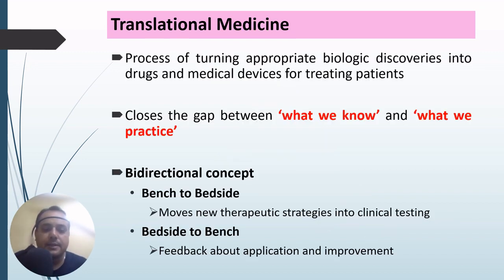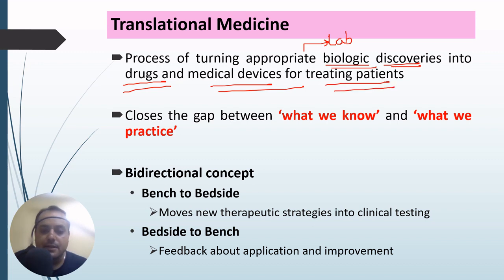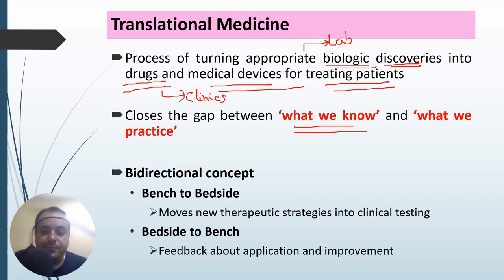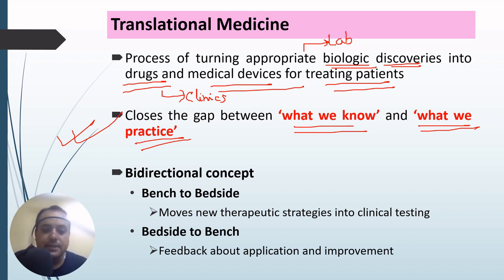Translational medicine is the process of turning appropriate biological discoveries — whatever we have discovered in the labs — into drugs or medical devices for treating the patient. This closes the gap between what we know through research in the laboratory and what we ultimately practice. A very important line: translational medicine closes the gap between what we know and what we practice.